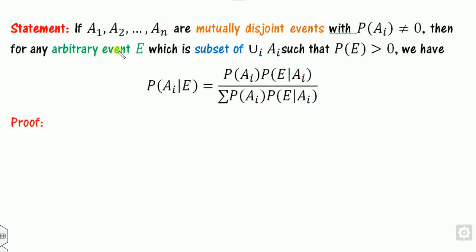What does Bayes' theorem state? It states that if there are some disjoint events A1, A2, ..., An with non-zero probabilities, then for any event E which is a subset of their union, the probability of Ai given that event E happens is given by the Bayes' formula.